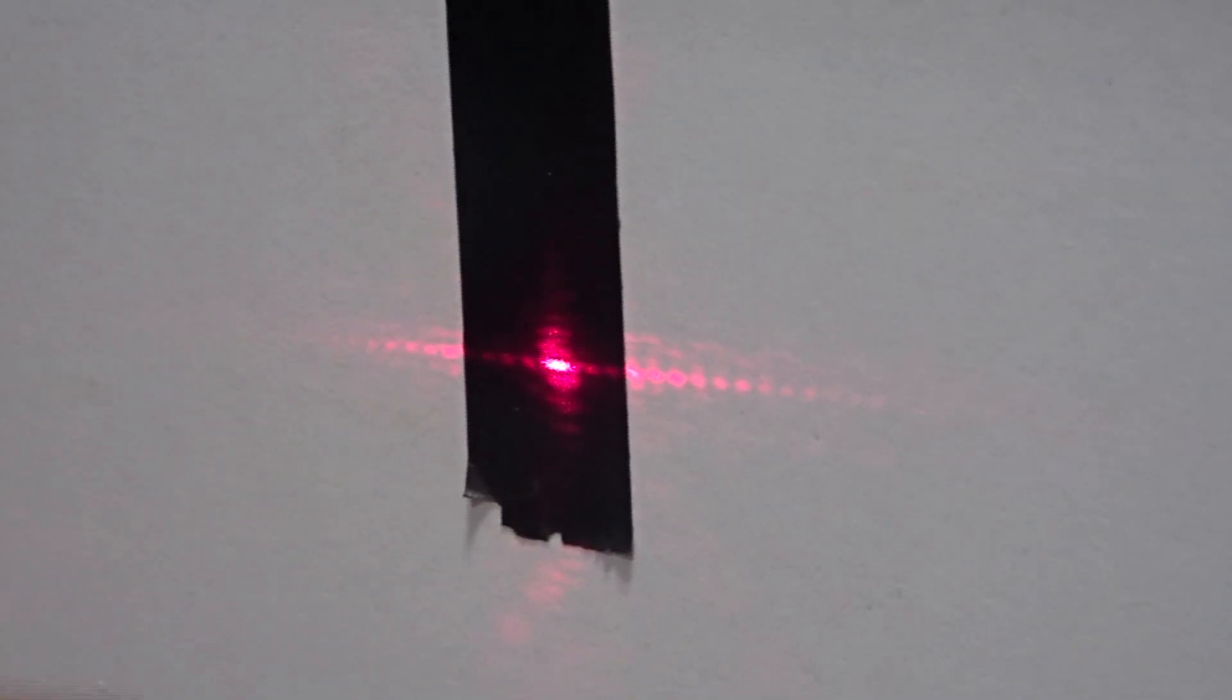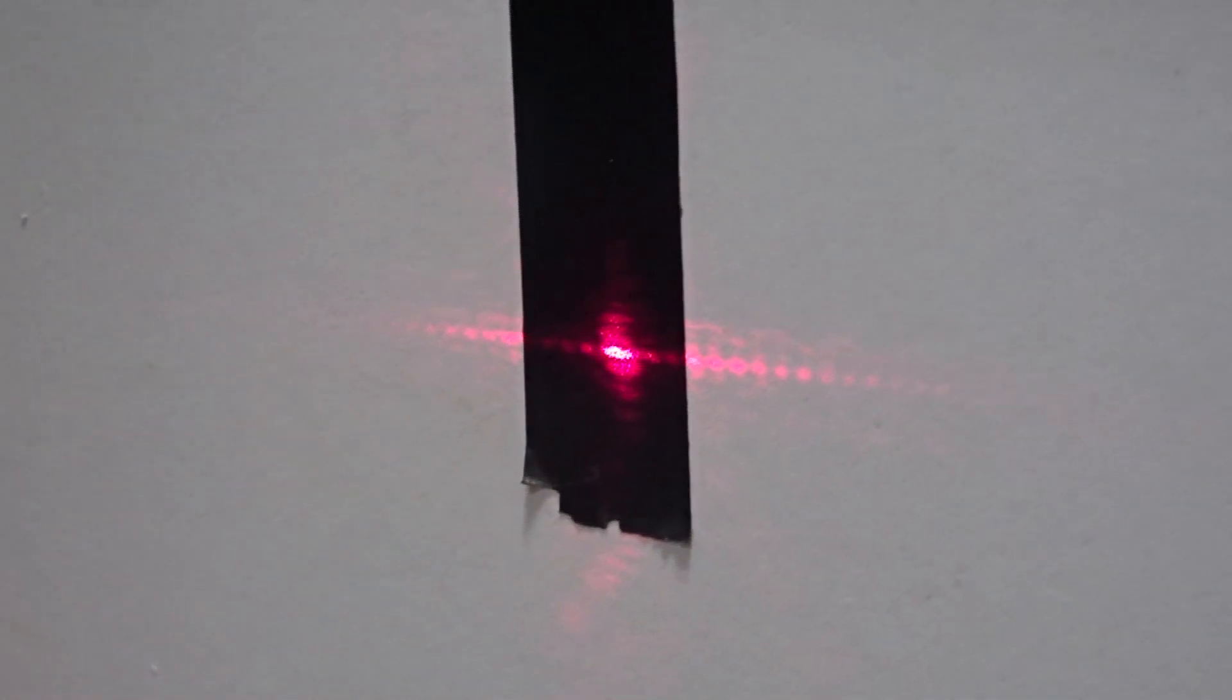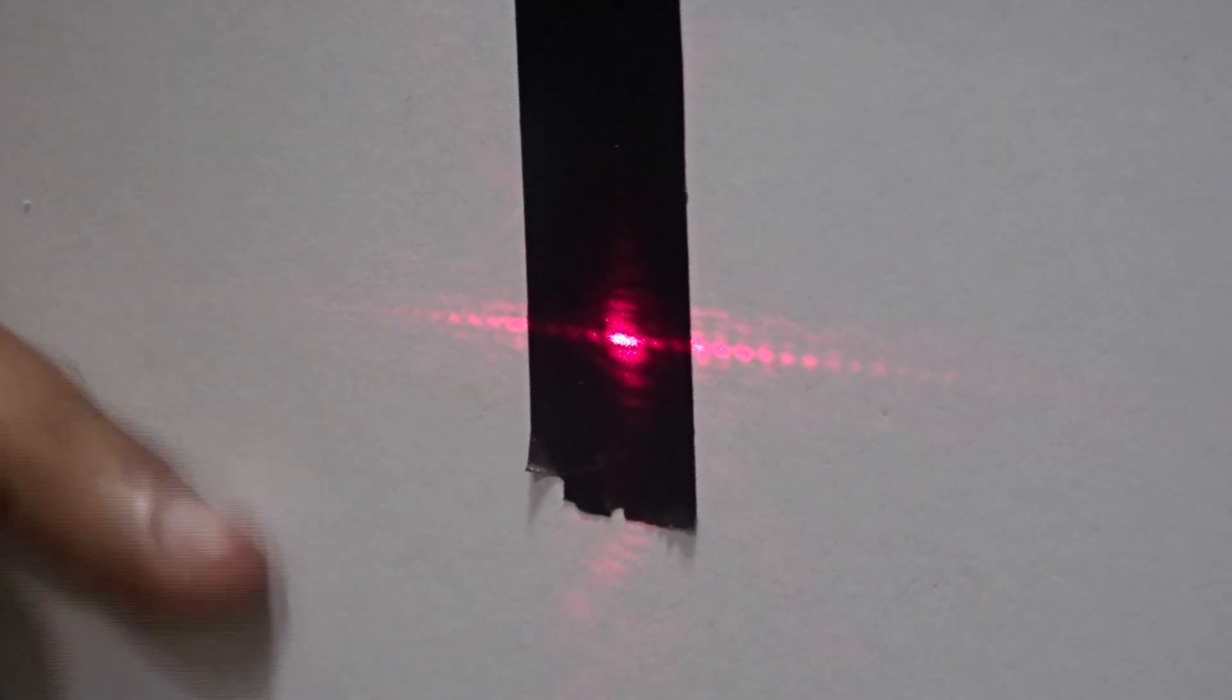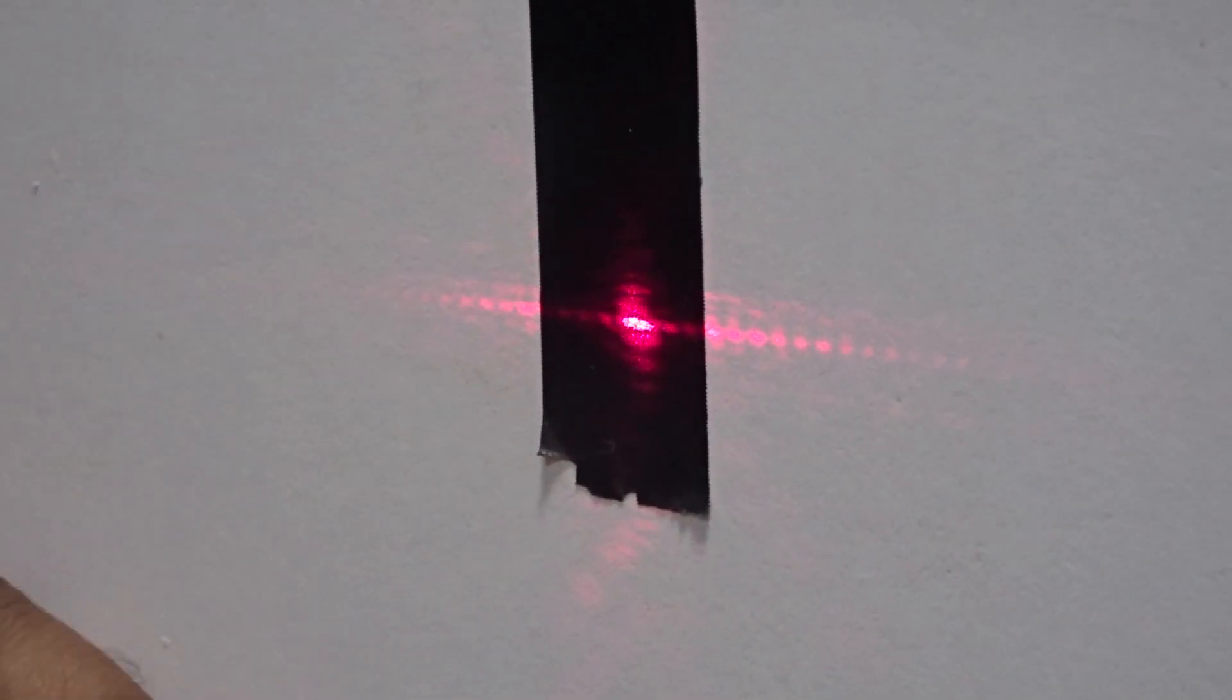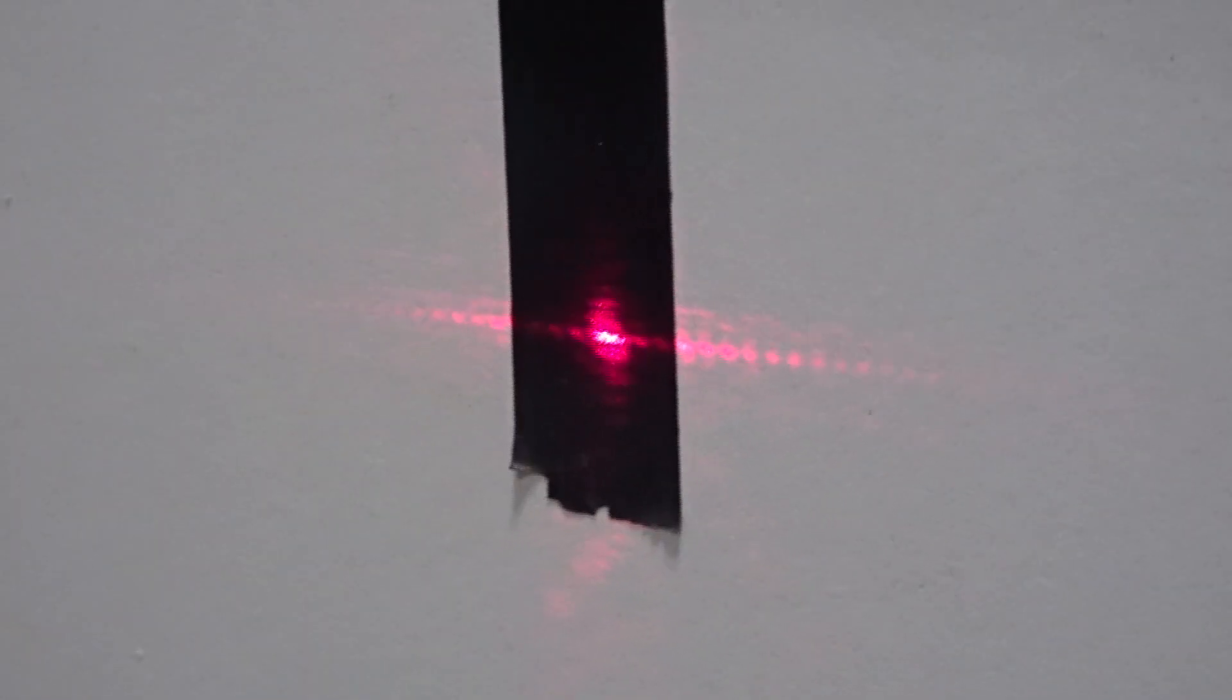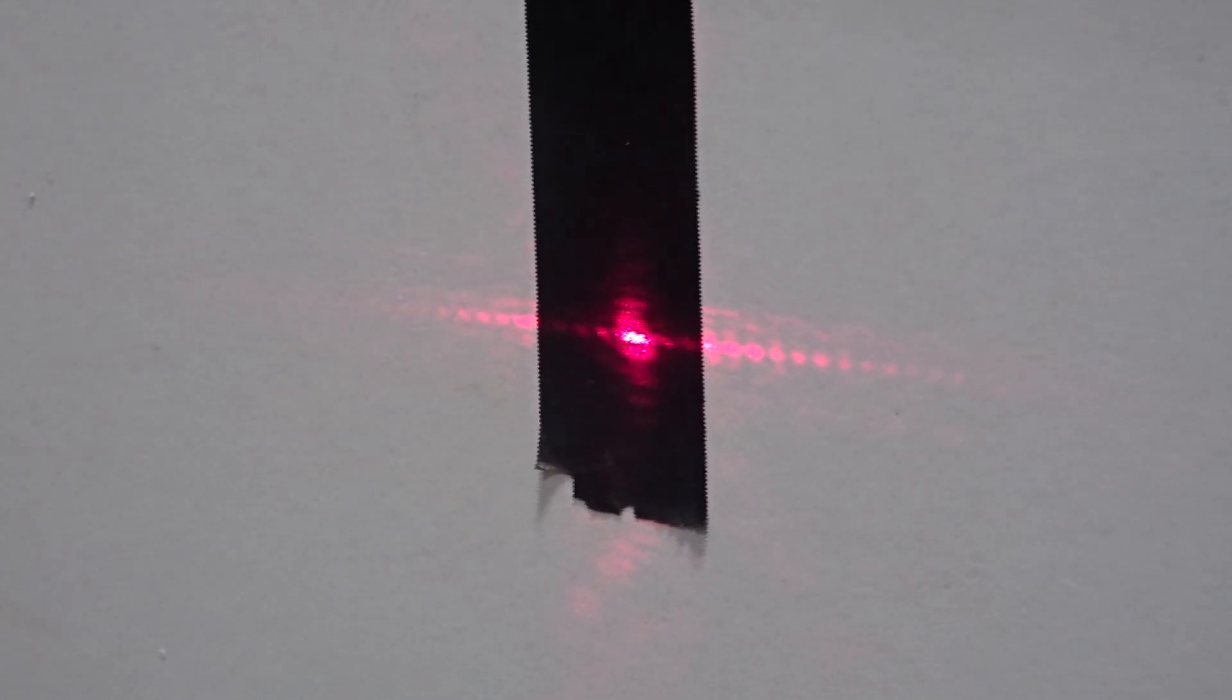Now we are at the screen and as you can see there is an intensity pattern which is like dark and bright, dark and bright, although it's a little bit faint because of the room light. So I will switch off the room light.